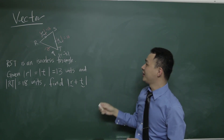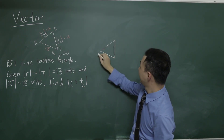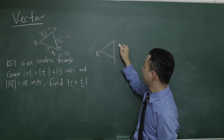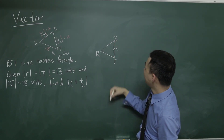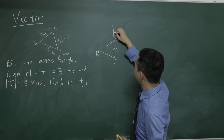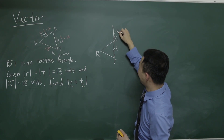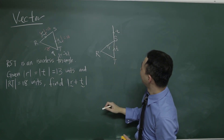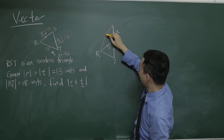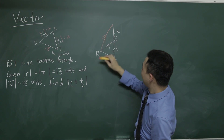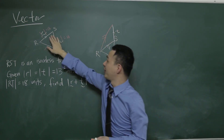To get R plus T, let me copy this triangle. This is R, this is T, and this is S. So let's say this vector is T. I will duplicate one more T here — assume this is a straight line. This is another T, and this is vector R. Therefore, R plus T is this resulting line. Do you see that? R plus T.